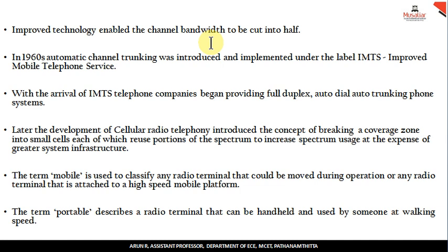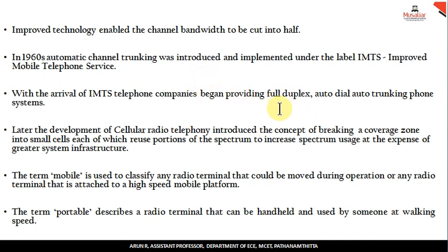Automatic channel trunking was implemented under IMTS, the Improved Mobile Telephone Service. IMTS was the first true mobile telephone service, and with its arrival telephone companies began to provide full duplex — whereas only half-duplex had existed before. Auto-dial and auto-trunking phone systems were also introduced.